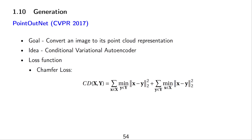One question we need to answer is how to compare two point clouds to define a loss function. Many possible loss functions could be quite computationally expensive. A simple go-to is the chamfer loss, which iterates over each point of the first point cloud and finds the closest neighbor in the second, measuring the distance.